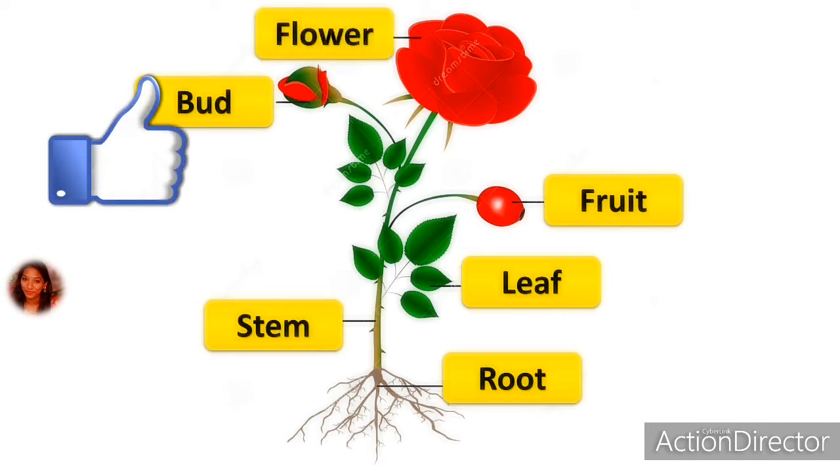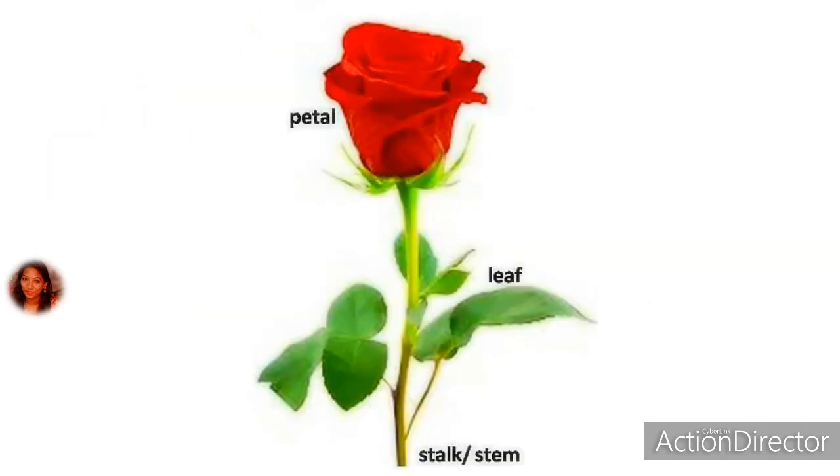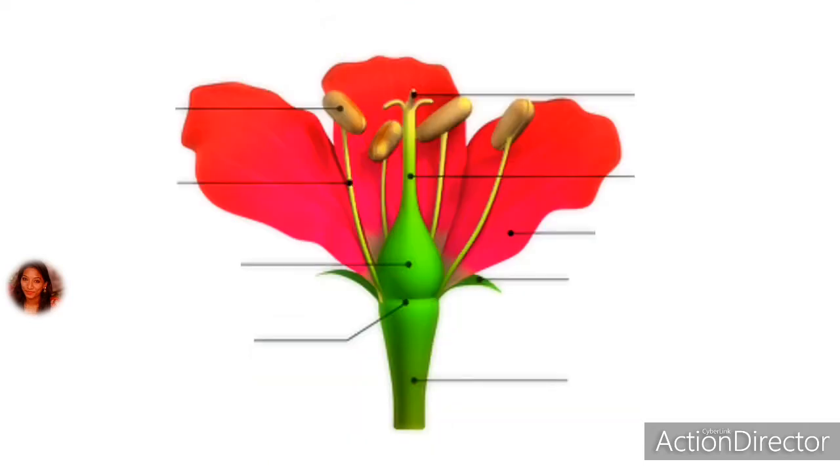When we see the flower, majorly it consists of the upper beautiful portion with petals as the main flower. Beneath there are some leaves, and then after the down portion to support the flower is the stalk. Now let us see what exactly the flower consists of.